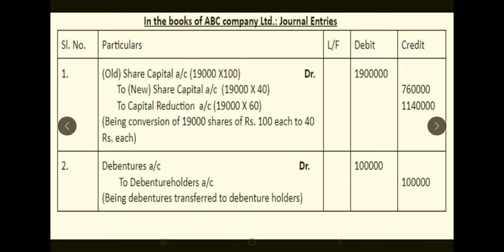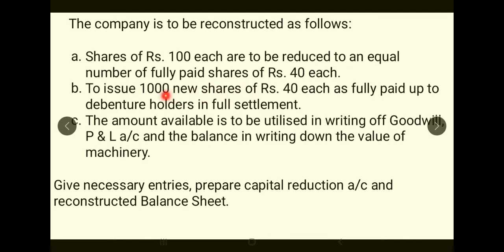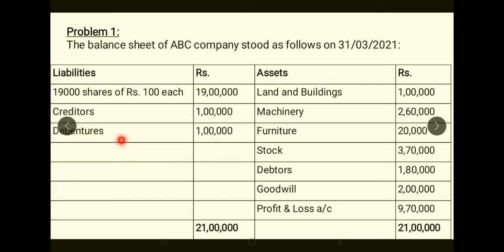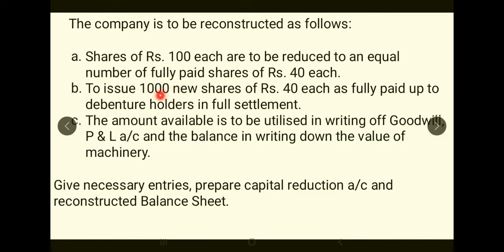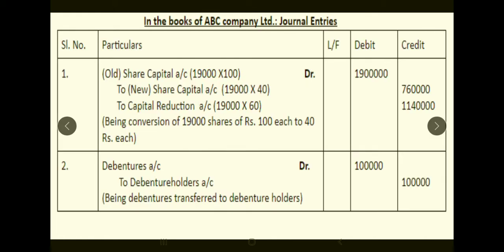Next, regarding debenture holders: you are issuing 1,000 new equity shares of Rs.40 each as fully paid up to debenture holders in full settlement. Before issuing equity shares, you first transfer debentures to Debenture Holders Account — that is, transfer Rs.1,00,000 (the balance sheet amount) being debentures transferred to debenture holders.